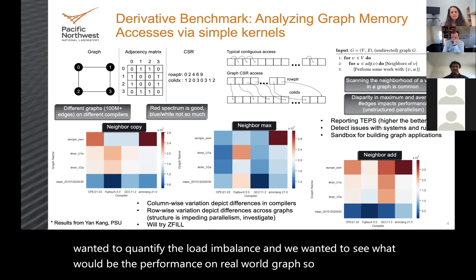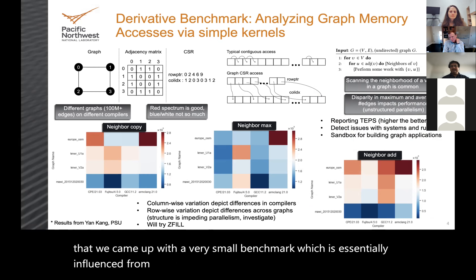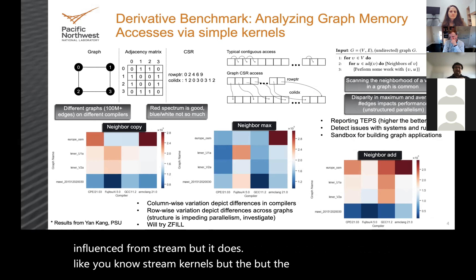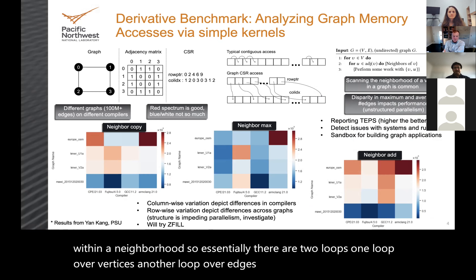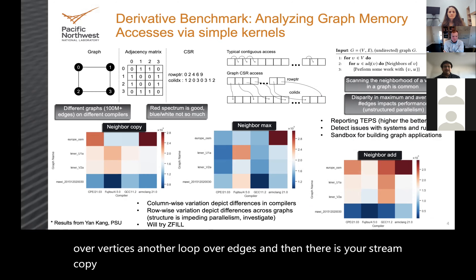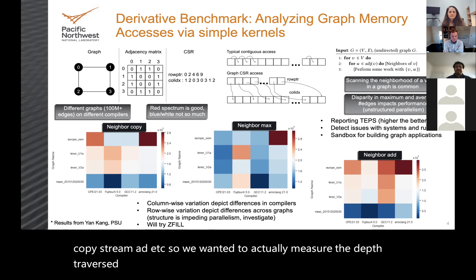We wanted to quantify the load imbalance and see performance on real-world graphs. We came up with a small benchmark influenced by STREAM, but performing stream kernels within a neighborhood. There are two loops — one over vertices and another over edges — then stream copy, add, etc. We wanted to measure traversed edges per second (higher is better) and use this as a sandbox for building efficient parallel graph algorithms.